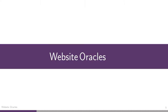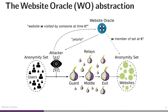This leads us to website oracles. A website oracle — just like an encryption oracle or a decryption oracle for those familiar with encryption security notions — is an abstraction of a capability that we believe is reasonable to assume an attacker has. It's a very powerful abstraction, and we're going to look at how to realize it later. A website oracle is available to a website fingerprinting attacker, where the attacker can ask the oracle a question and get a yes or no answer: was a particular website visited by someone at a particular point in time through the Tor network?